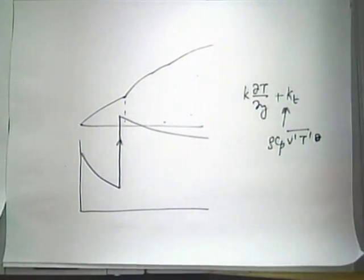Similarly to how we defined the laminar sub-layer, buffer layer, and turbulent core for hydrodynamics, we can define these for the thermal boundary layer. In the laminar thermal sub-layer, heat flux is k times dT/dy. In the turbulent thermal layer, it will be rho c_p v-prime T-prime. The buffer layer will have both in comparable order of magnitude.